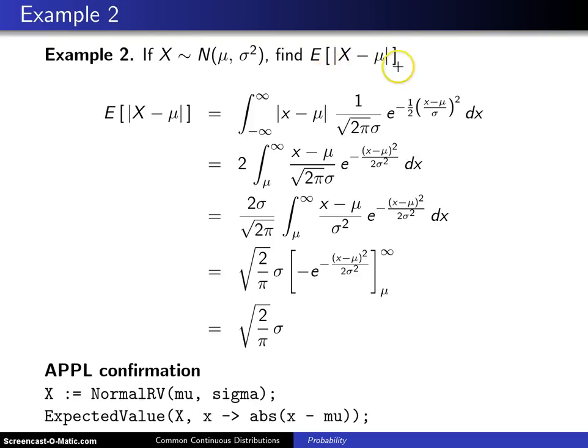This is an interesting expected value because you know that the variance is the expected value of x minus mu, the quantity squared, and in that particular case, the squaring takes care of the fact that some values might fall to the left or some values might fall to the right of mu.